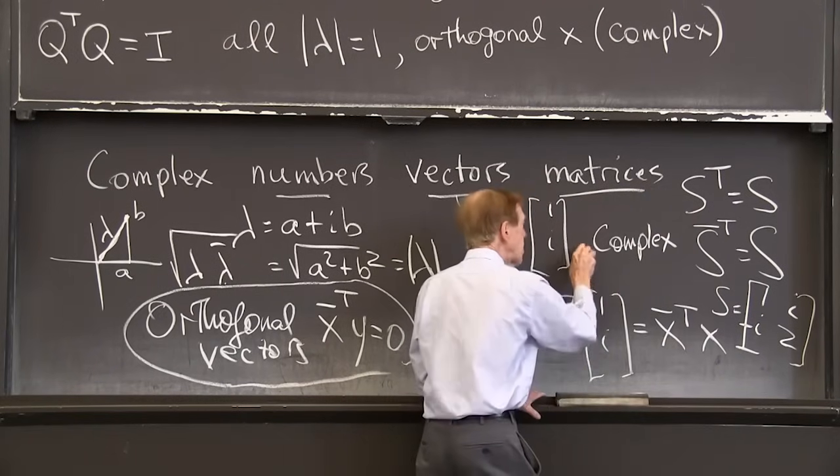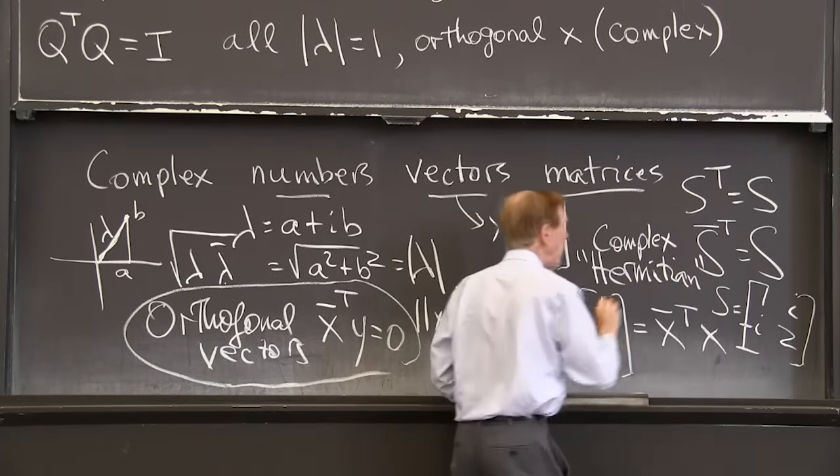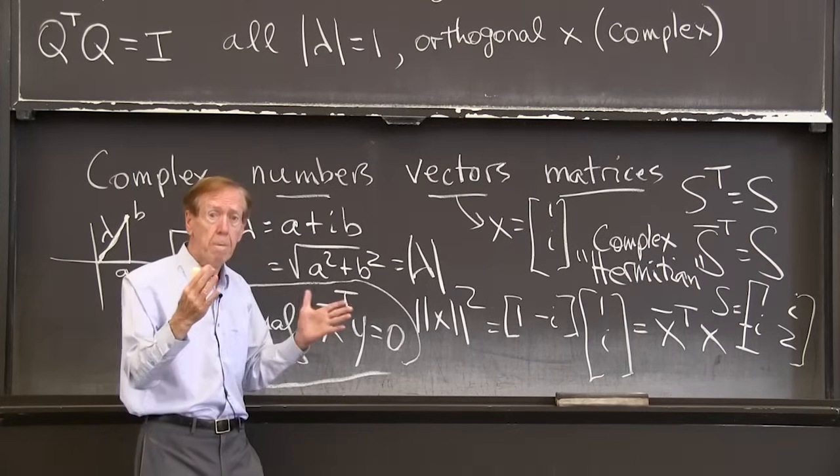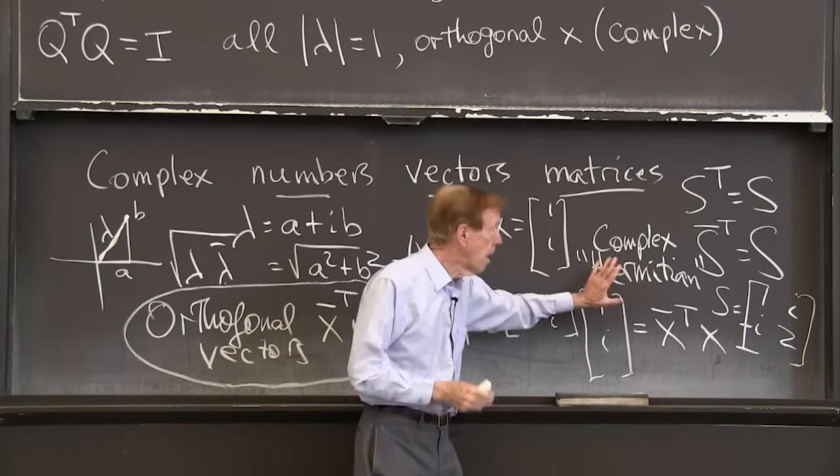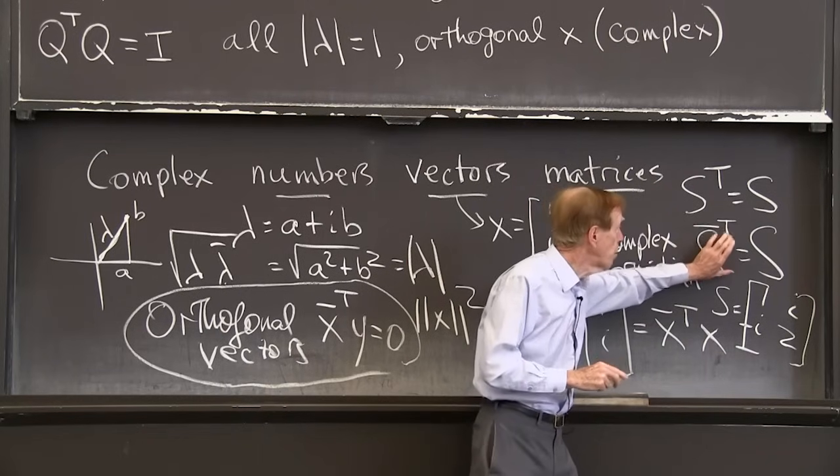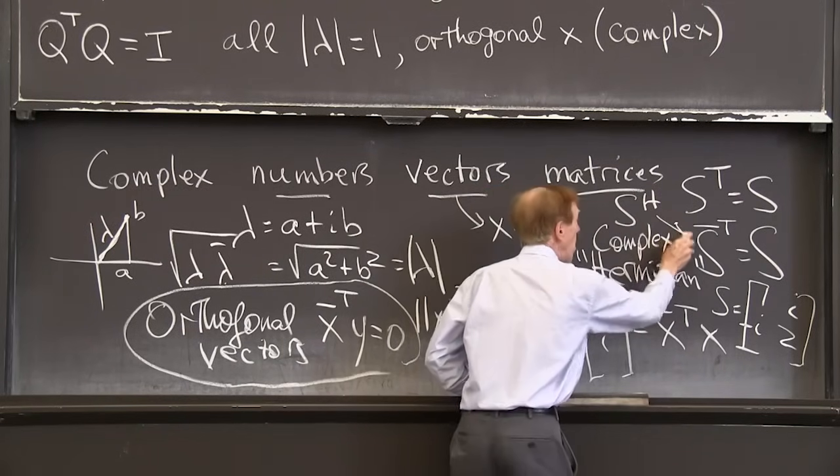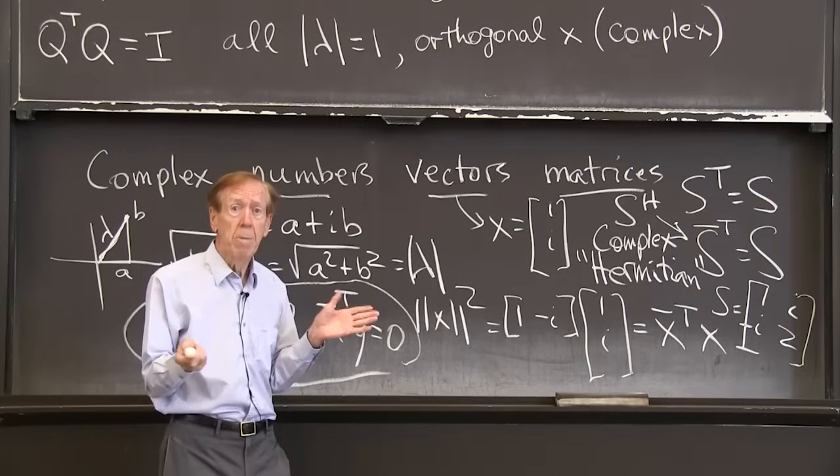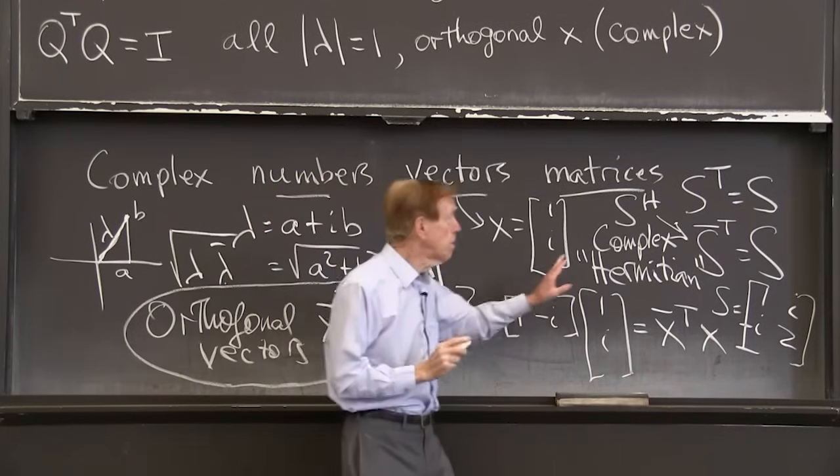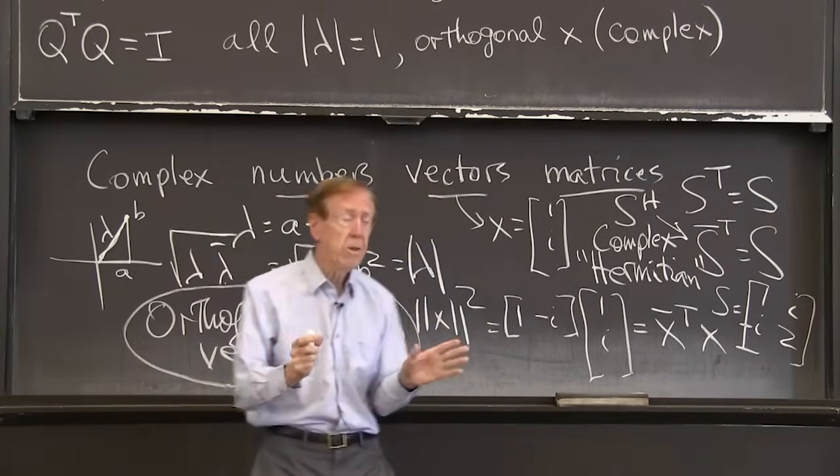This is called a Hermitian matrix, among other possible names. Hermite was an important mathematician. He studied this complex case, and he understood to take the conjugate as well as the transpose. And sometimes I would write it as S^H in his honor. So if I want one symbol to do it, S^H in engineering, sometimes S with a star tells me take the conjugate when you transpose a matrix.